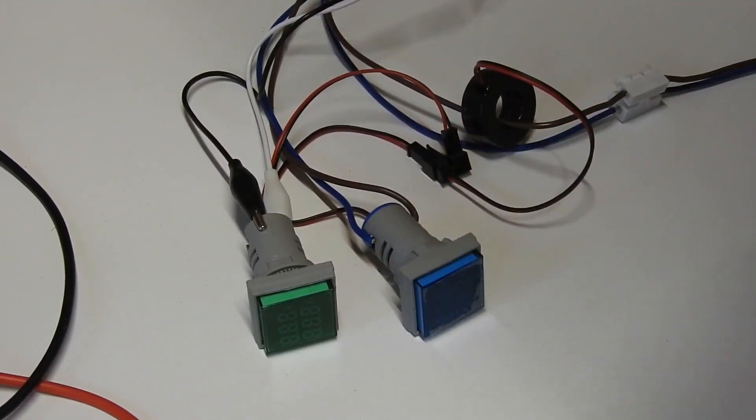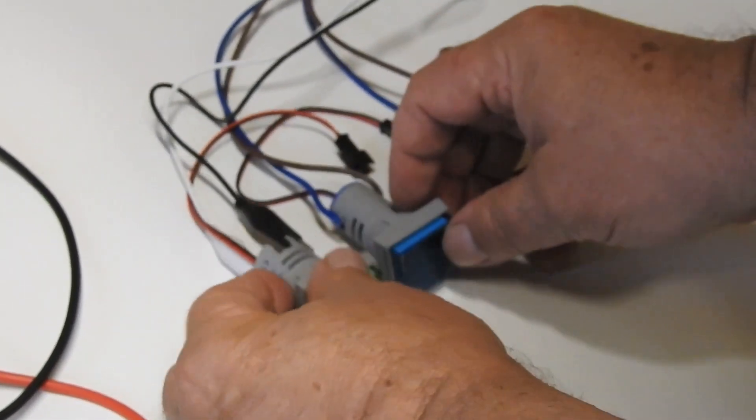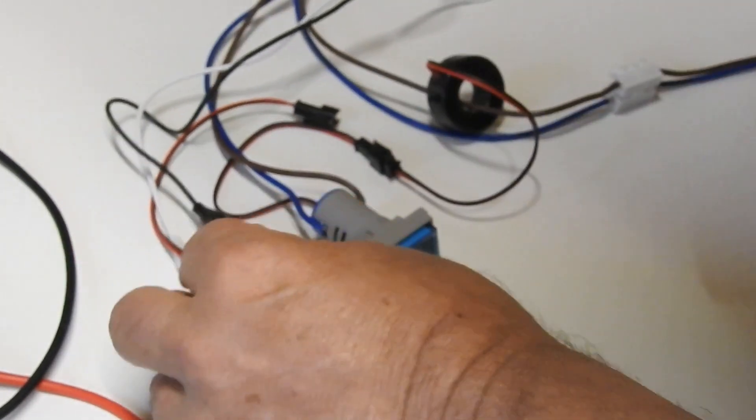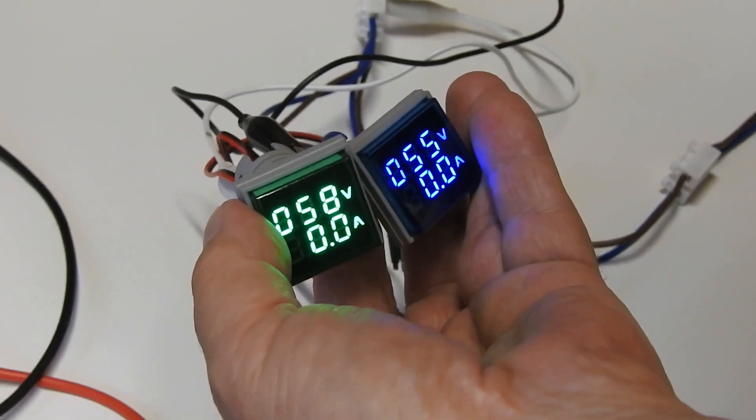I've got a blue one and a green one. They show voltage and current. Let me turn them on. They're quite bright, pretty displays.